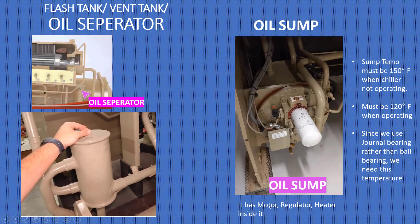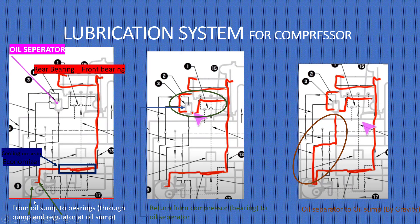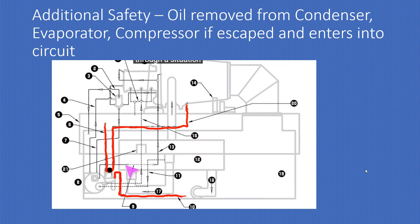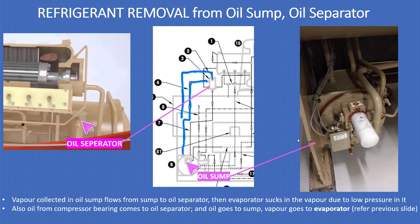The oil sump has a motor, regulator, and heater inside it. Some important key points: oil temperature must be 150°F when the chiller is not operating and 120°F when operating. Since this chiller uses journal bearings rather than ball bearings, this temperature is required for lubrication. The lubrication system for the compressor flows from the oil sump to the bearings through a pump and regulator. Oil returns from the compressor bearings to the oil separator, then back to the oil sump by gravity. An additional safety circuit removes oil that has escaped into the refrigerant circuit from the condenser, evaporator, and compressor.